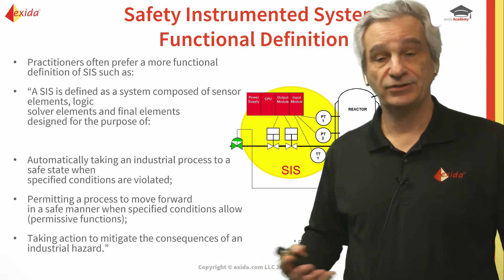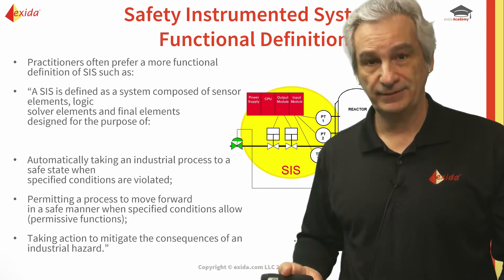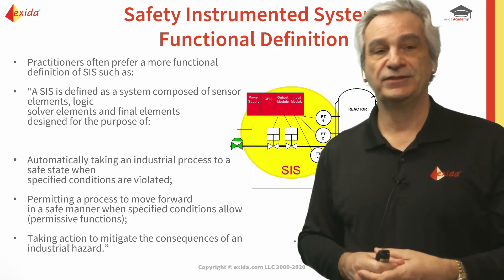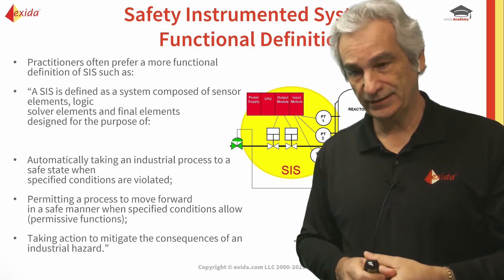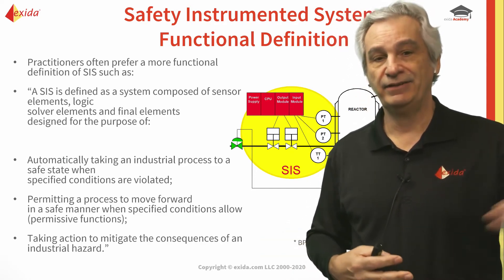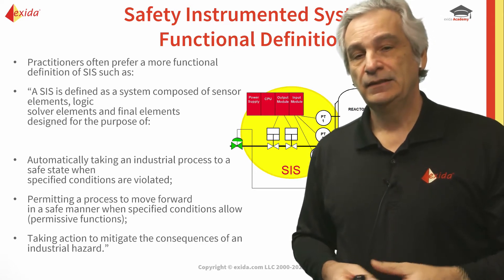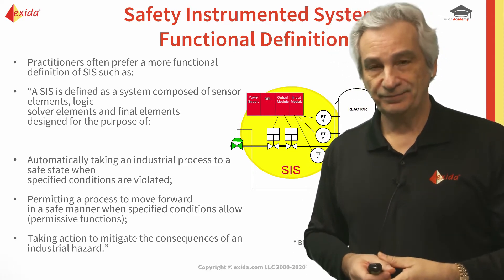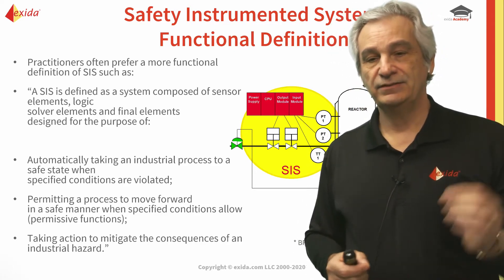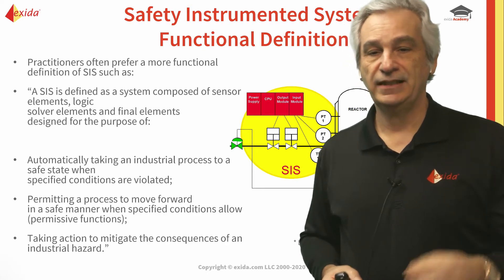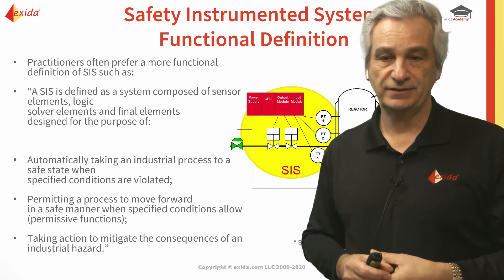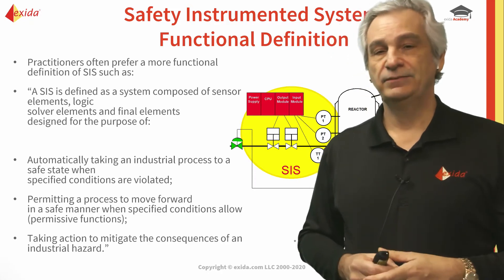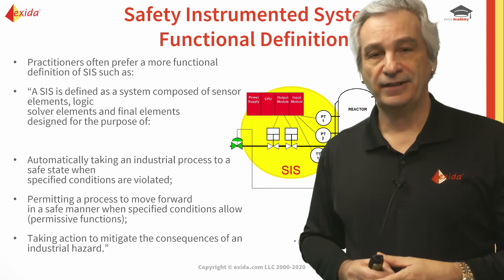A SIS can also permit a process to move forward in a safe manner if the required preconditions — permissives — are present, such as in sequential startup or sequential control. The third function, which is very interesting, is to take action to mitigate the consequences of an industrial hazard, and this one specifically applies to fire and gas.